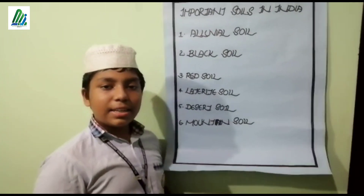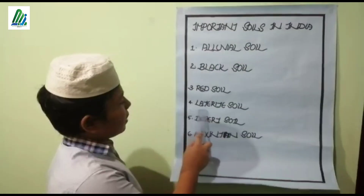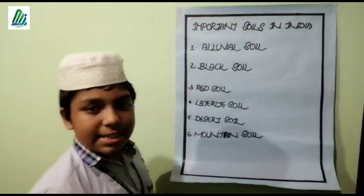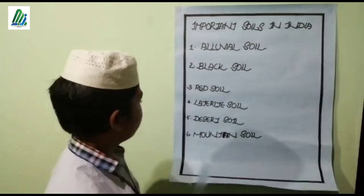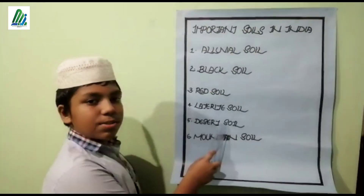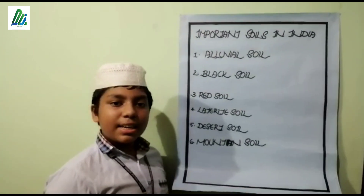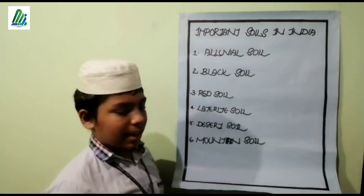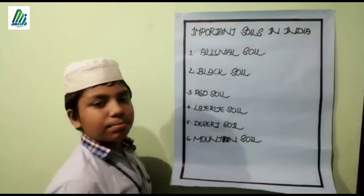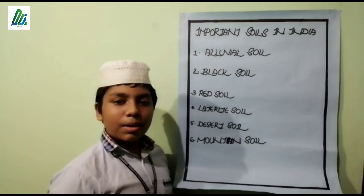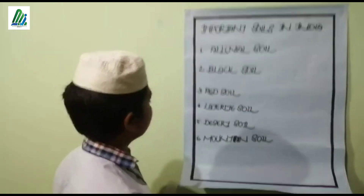The third type is red soil, seen in some parts of Karnataka and some parts of India. It is red in color due to the presence of iron. The fourth type is laterite soil, which is a mixture of clay and red soil and is not very fertile. The fifth type is desert soil, which has very low moisture content and is found in desert areas.